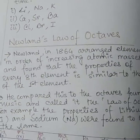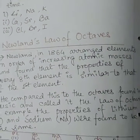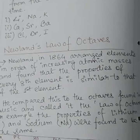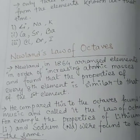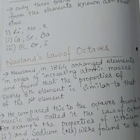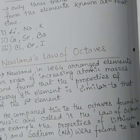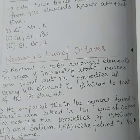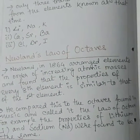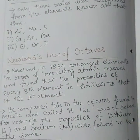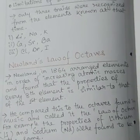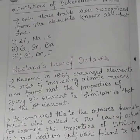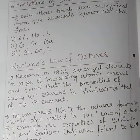The limitation of Dobereiner's Triads is that only three triads were recognized from the elements known at that time: lithium, sodium, potassium; calcium, strontium, barium; and chlorine, bromine, iodine. After this, Newlands proposed the Law of Octaves. In 1864, Newlands arranged elements in order of increasing atomic masses and found that the properties of every 8th element are similar to the first element. He compared this to the octaves in music and called it the Law of Octaves — for example, the properties of lithium and sodium were found to be the same.